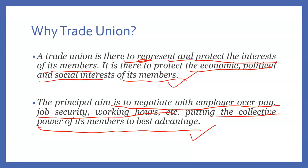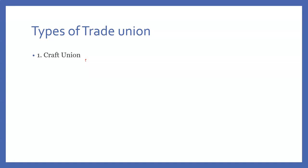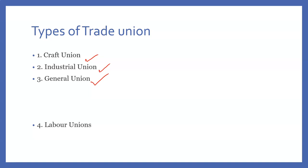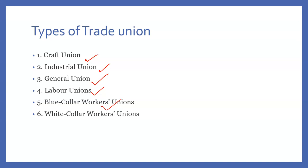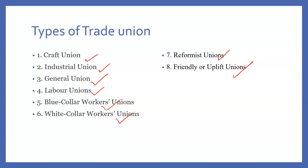So what are the various types of trade union we have? The first is called craft union. The second is called industrial union. The third is called general union. The fourth is called labor union. The fifth is called blue collar worker union. The sixth is called white collar union. Next is called reformist union. And the last one is called friendly or uplift union. So these are the eight different types of union. Let's discuss one by one.